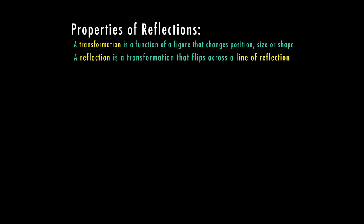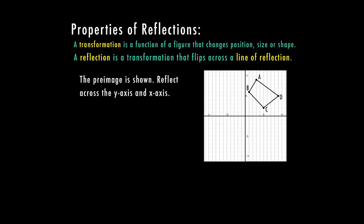Here we have a graph with a quadrilateral — this is our pre-image. Any sort of transformation is going to take that pre-image, move it according to the transformation, and then you have a new image. In this case we're going to reflect this image two different ways — typically across the y-axis or the x-axis.